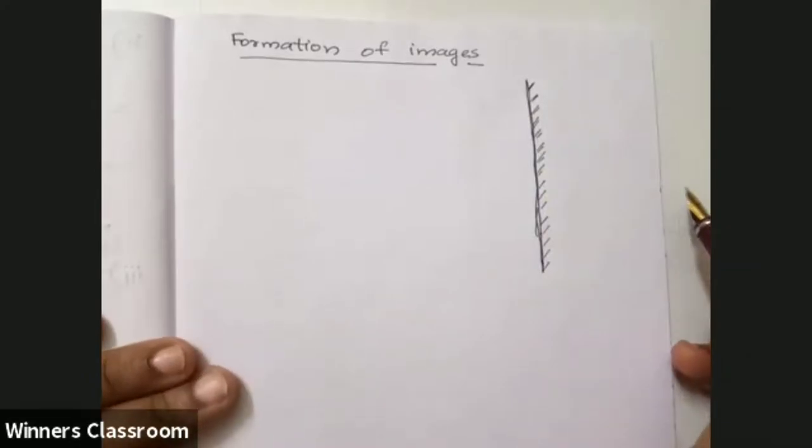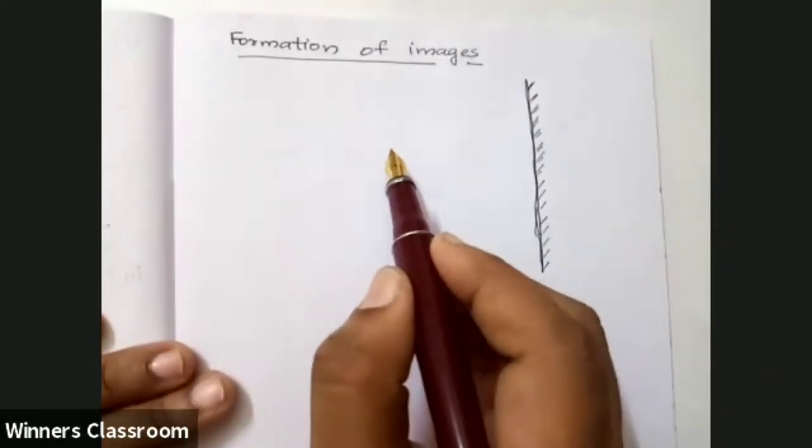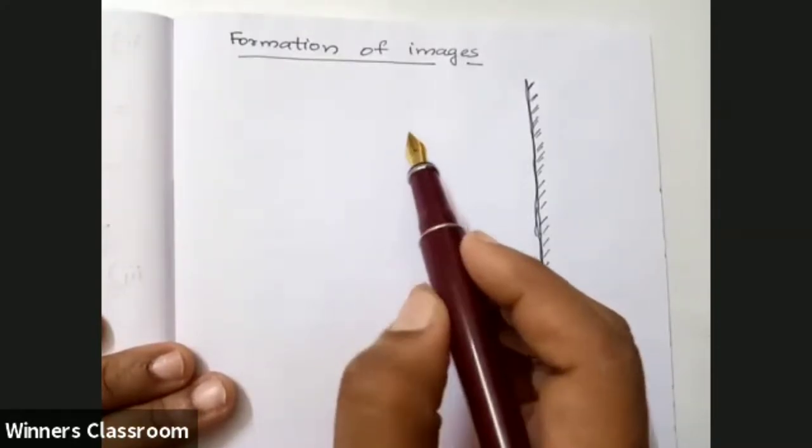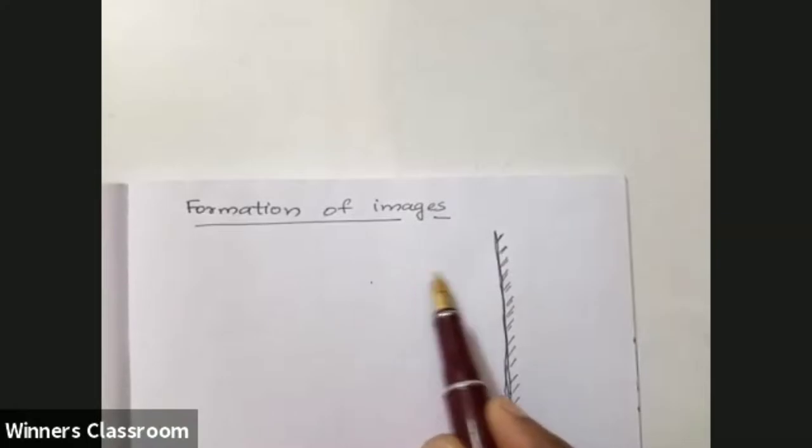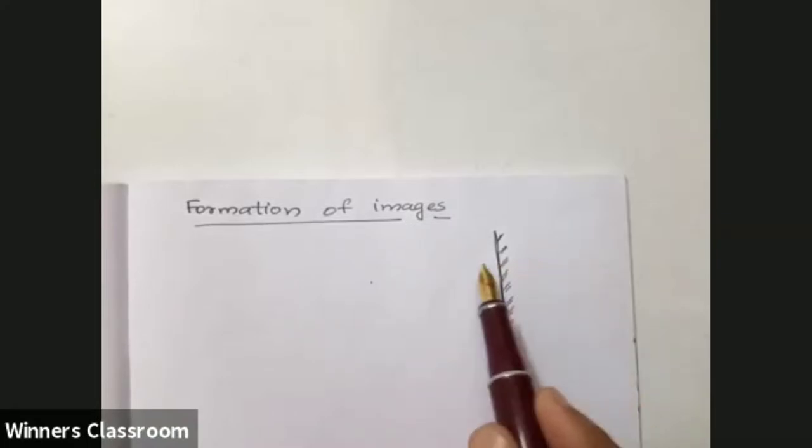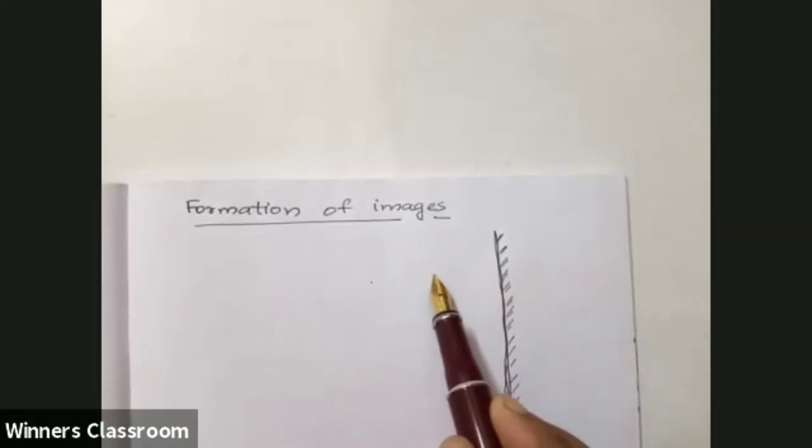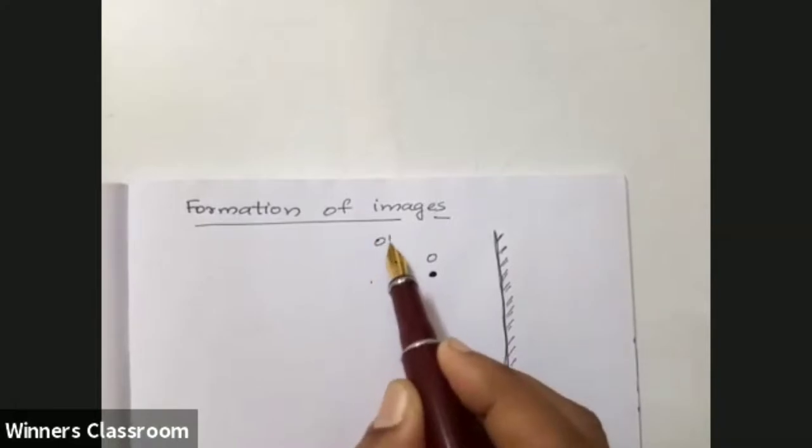Suppose there is a point object. We represent the object here at some distance from the mirror. The image is formed behind the mirror. The object is here - we are placing the object.